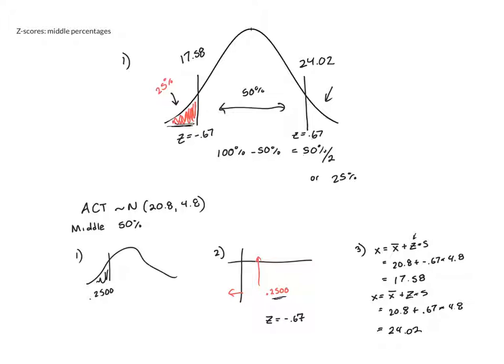I repeated the formula here, and what we have found is, according to our values, the middle 50% of people score between 17.58 and 24.02.